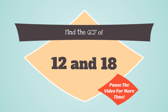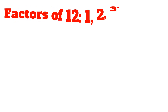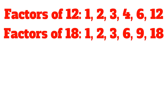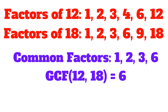Find the greatest common factor of 12 and 18. Pause the video if you want more time on this question. The factors of 12 are 1, 2, 3, 4, 6, and 12. The factors of 18 are 1, 2, 3, 6, 9, and 18. So the common factors — the numbers that are in both lists — are 1, 2, 3, and 6. The largest number here is 6, so the greatest common factor of 12 and 18 is equal to 6.